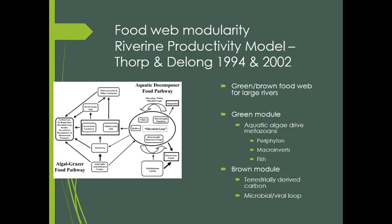Where is this actually shown up? We can see there are often two compartments within a food web: the green portion and the brown portion of the food web. Sometimes this is called the fast and the slow cycles. The riverine productivity model really looks at this idea in large rivers, examining the green and the brown food web.